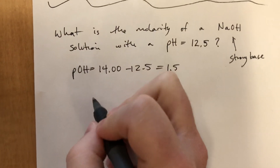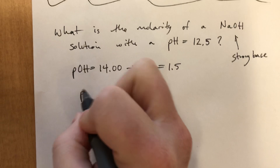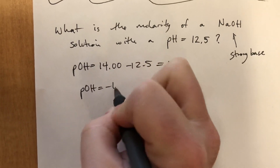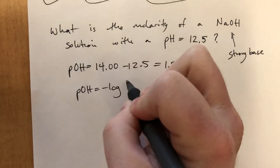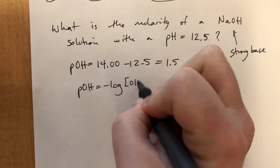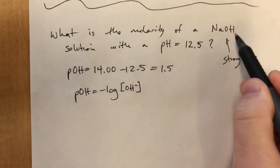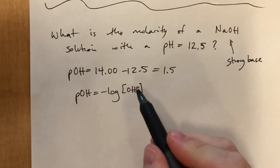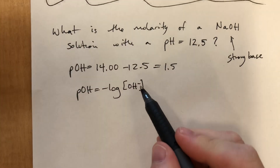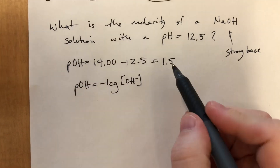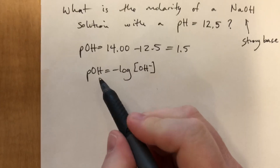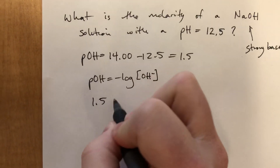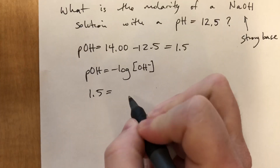pOH is equal to the negative log of the concentration of OH⁻. The idea is that for every mole of NaOH that dissociates, you will get a mole of OH⁻. Since we know pOH is equal to 1.5, we can basically solve for this concentration.